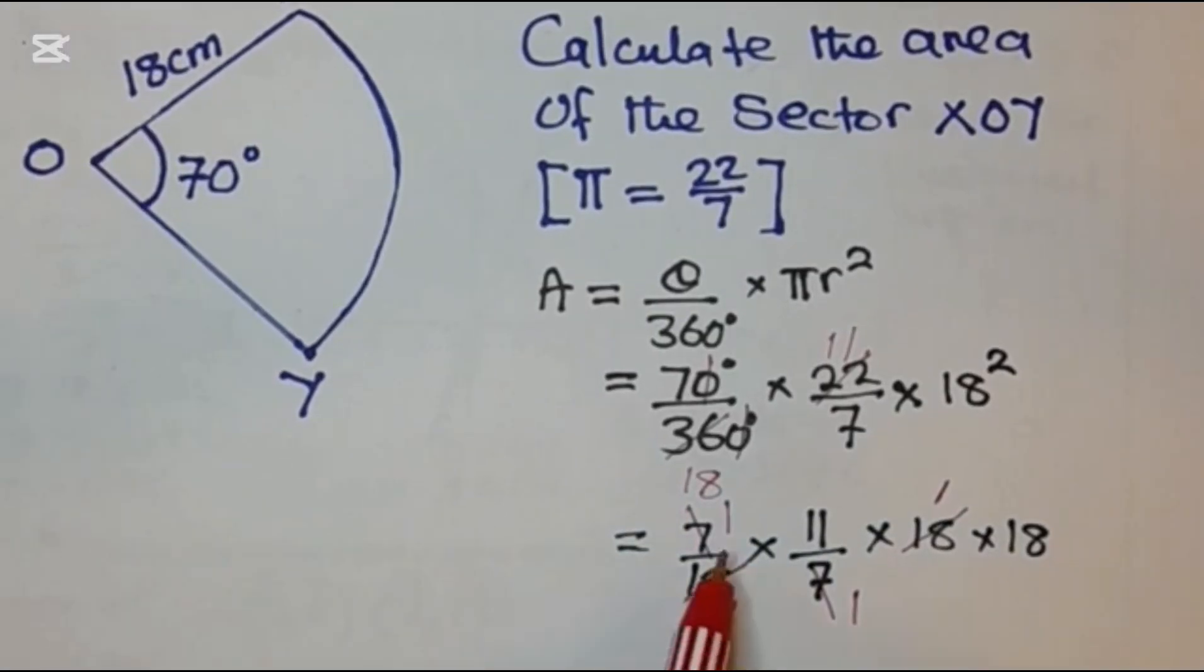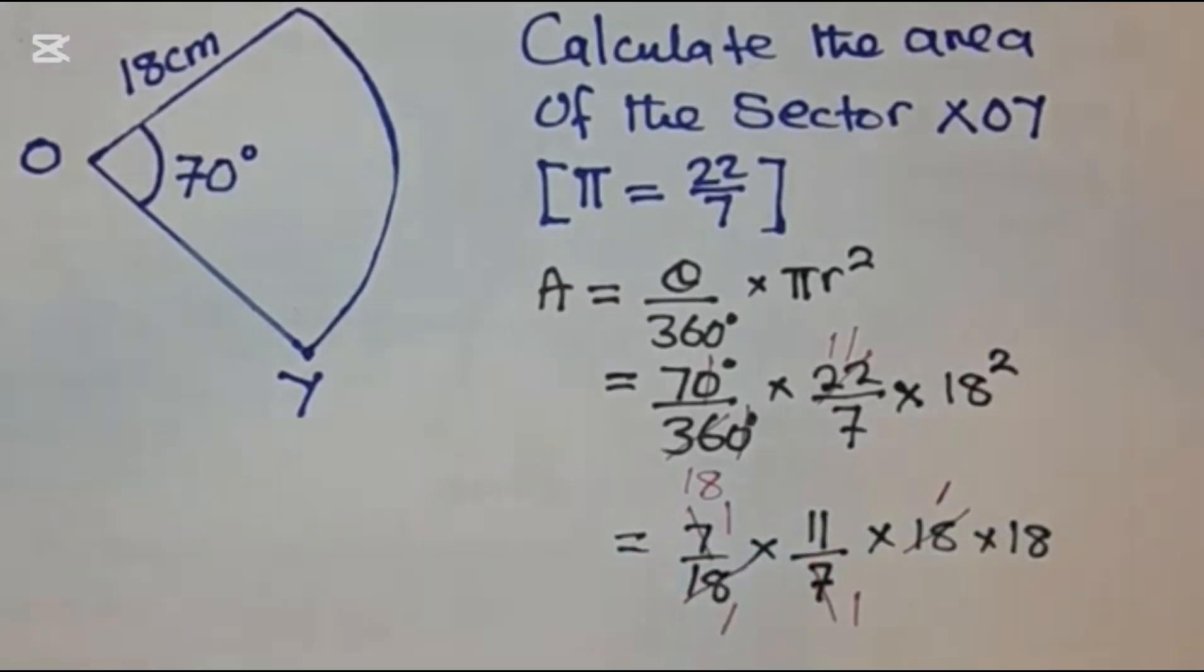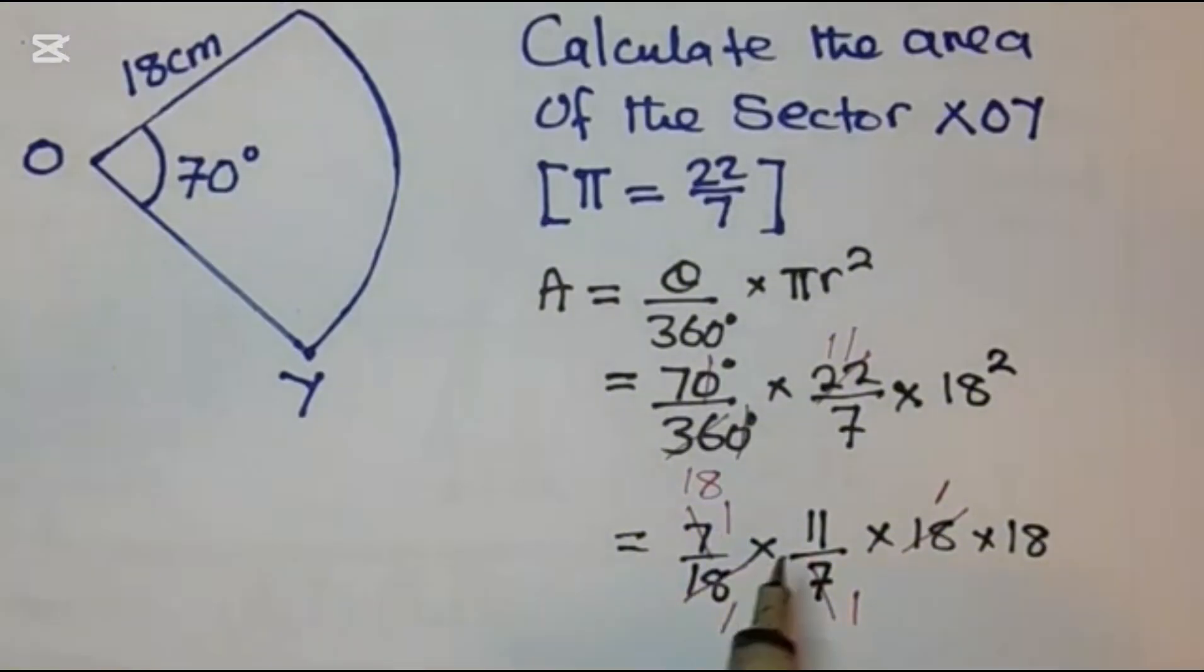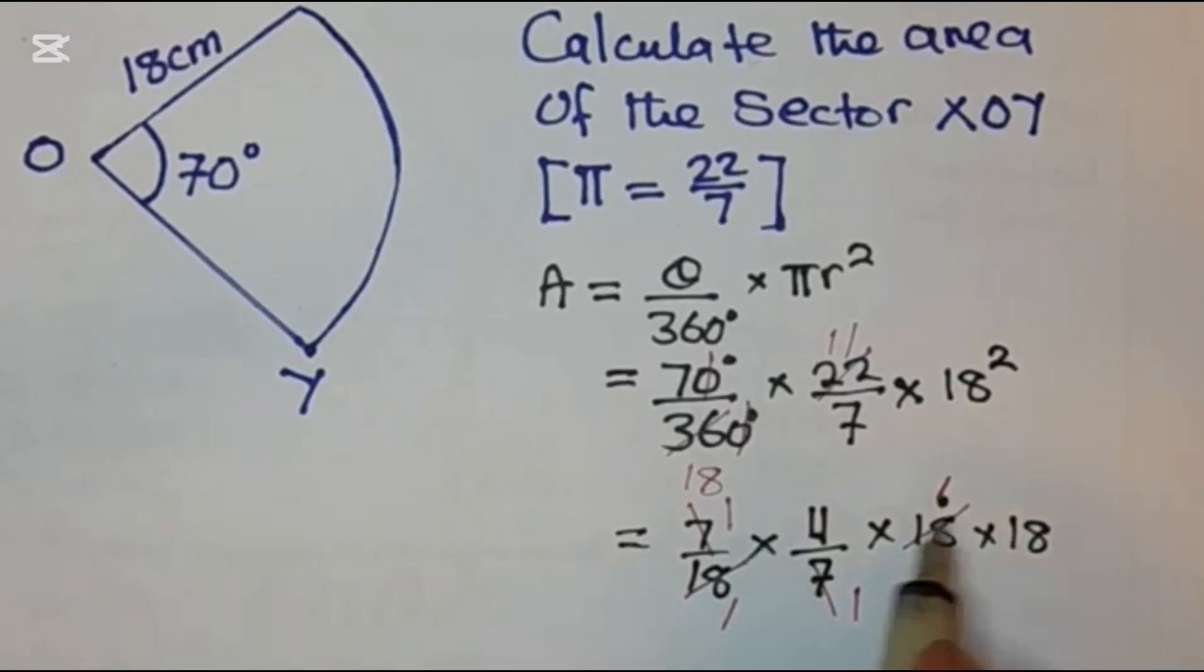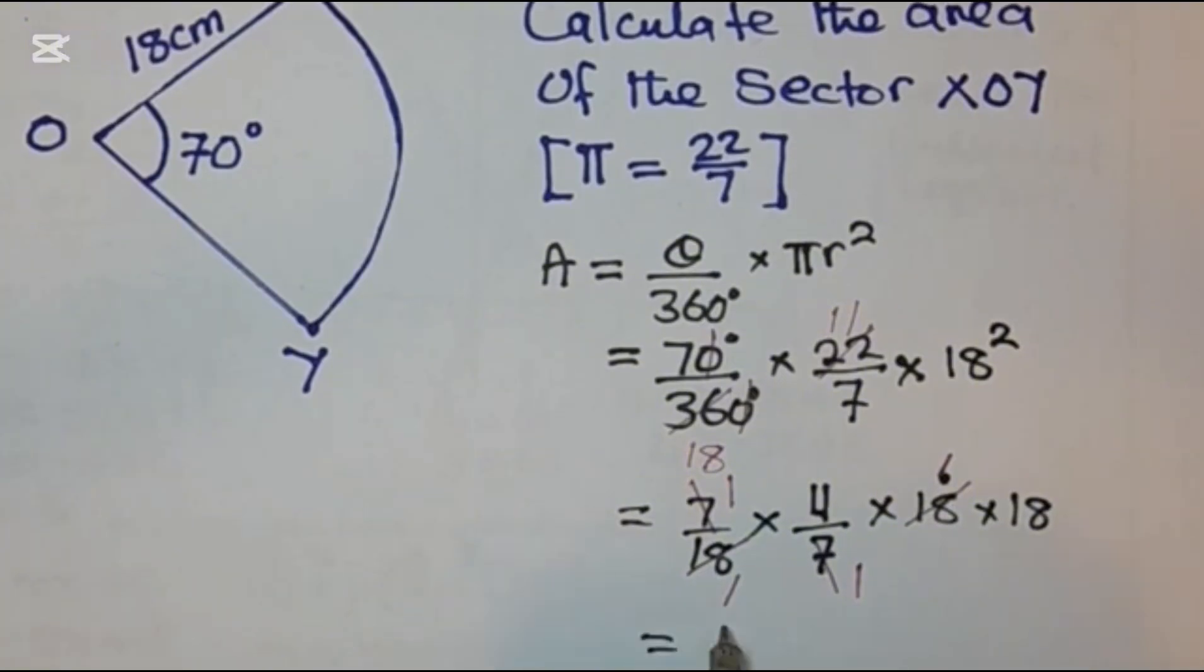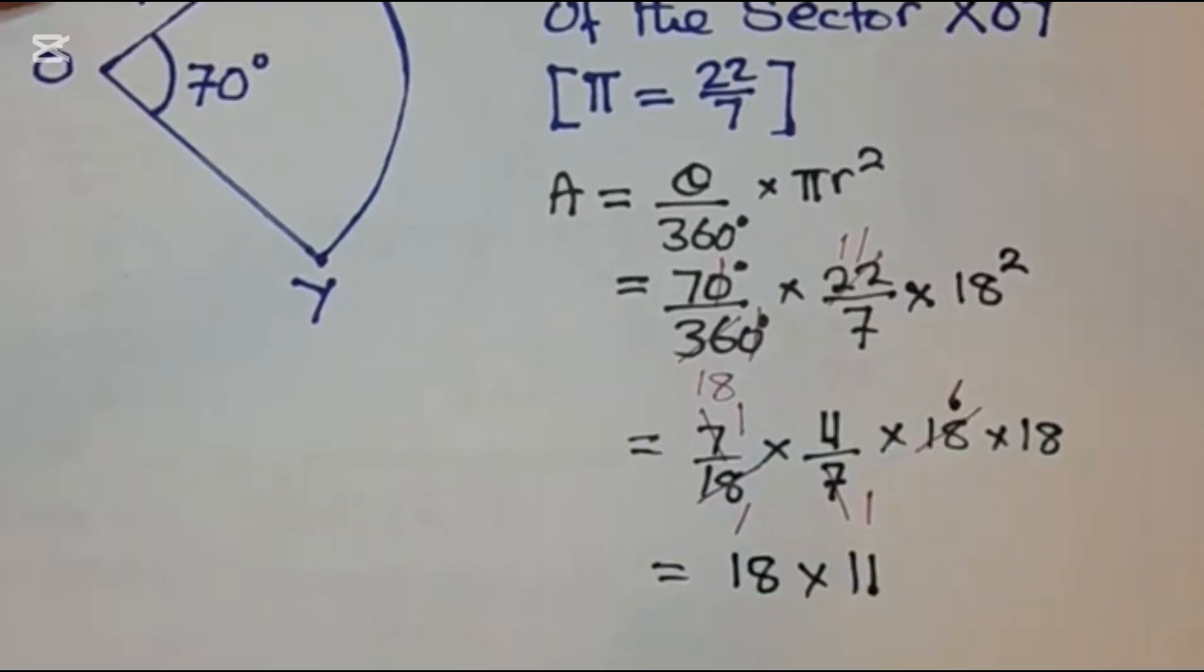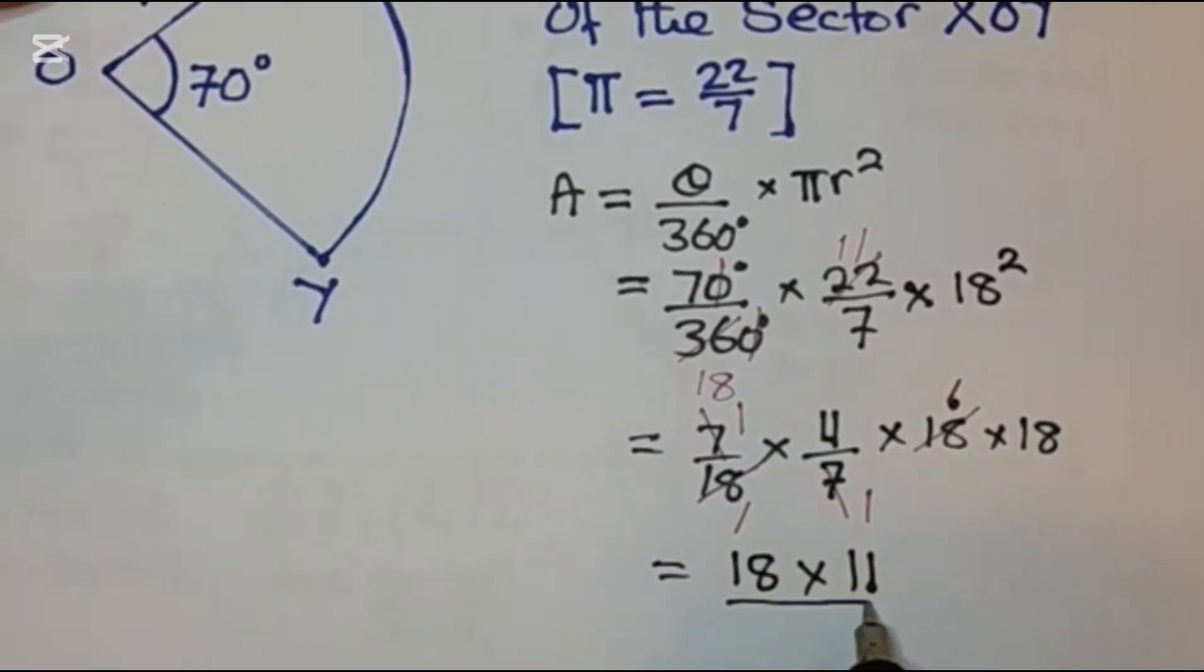So what you are remaining with is 1 times 11 is 11, times 18. So on top here you have 18 times 11 or 11 times 18, which is just the same, then over 1 times 1, which is just 1.